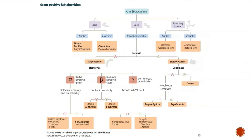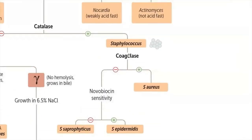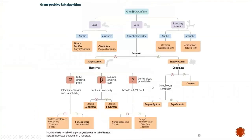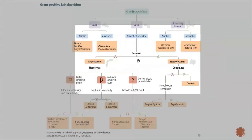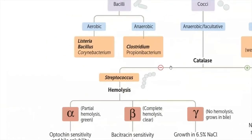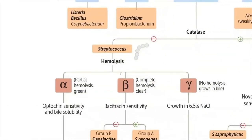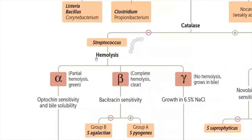Looking at the big picture of the algorithm: catalase-positive indicates Staphylococcus; coagulase-positive indicates Staph aureus; if coagulase-negative, perform the novobiocin sensitivity test to differentiate Staph saprophyticus from Staph epidermidis. Now, if during the catalase test we isolate a gram-positive coccus that is catalase-negative, we are thinking of Streptococcus.